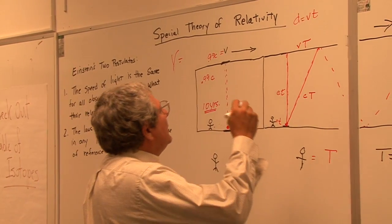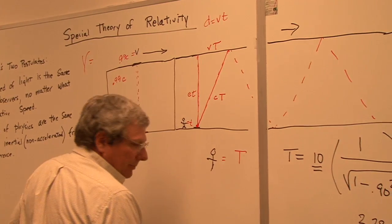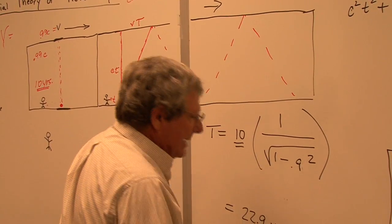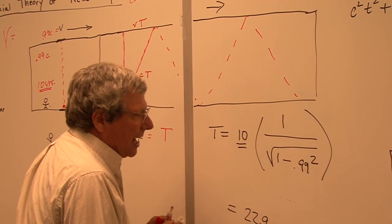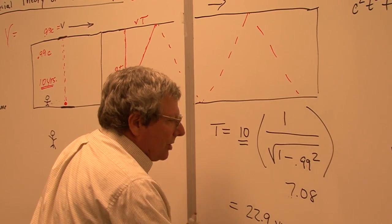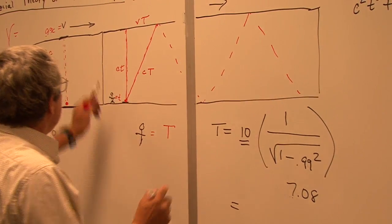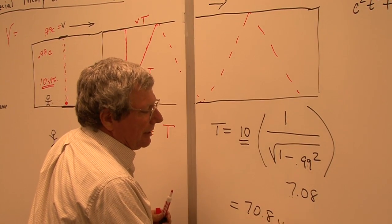Yeah, 7.08, right? So now we're really talking about something much more severe. If we're going 99%, then we're saying gamma was 7.08.